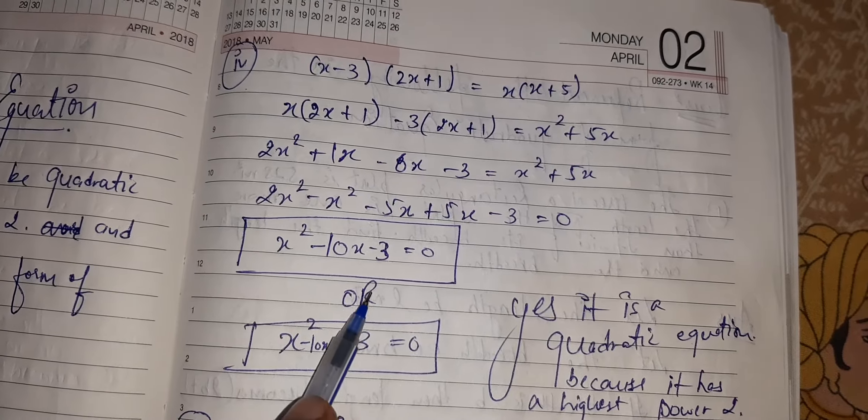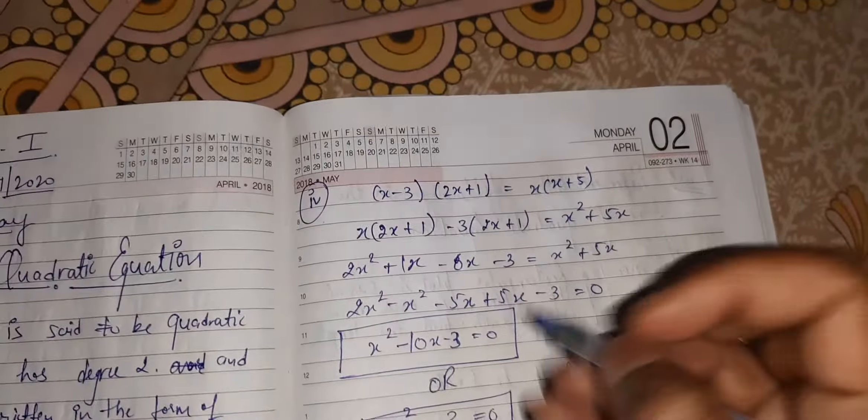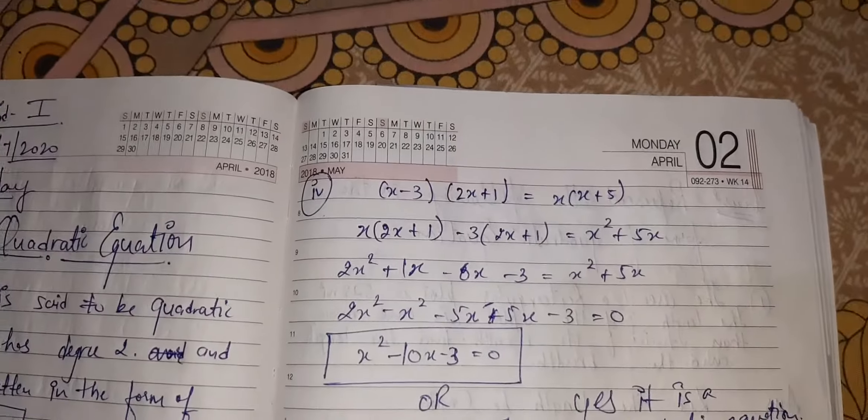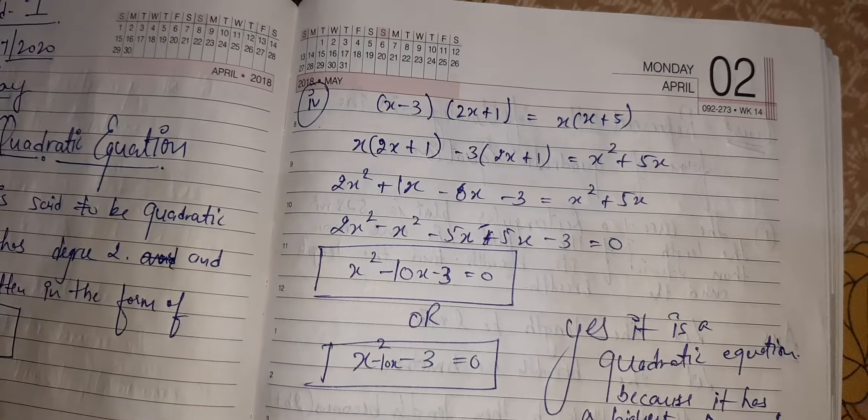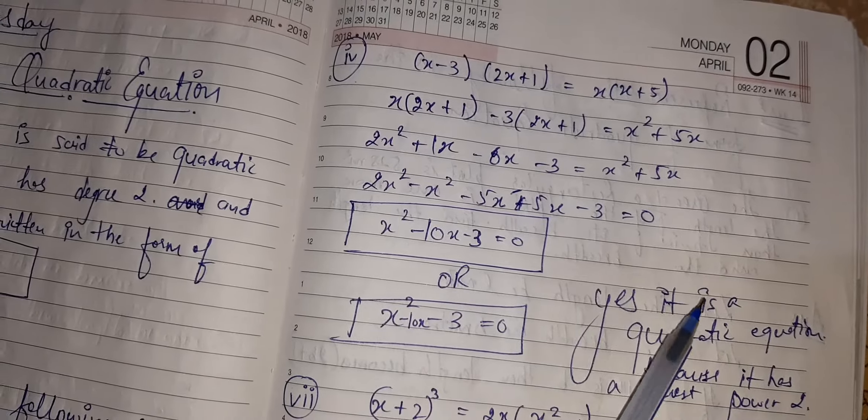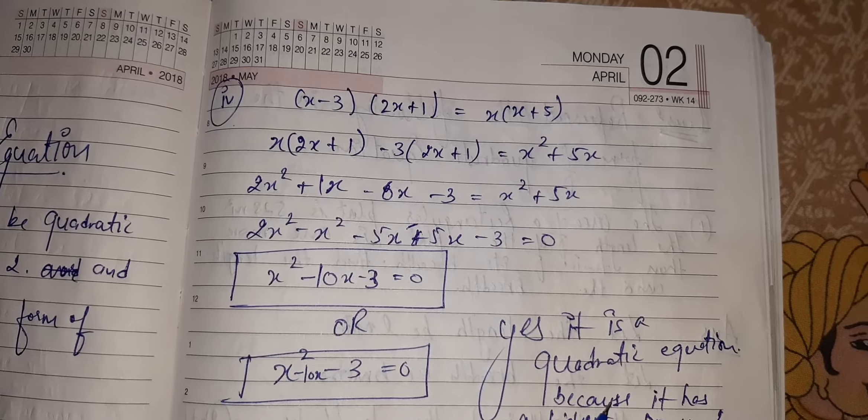Yes or no? It will become minus. It is minus 5X. 2X squared minus X squared minus 5X minus 5X minus this is equal to 0. So we have got this. Yes, it is a quadratic equation.